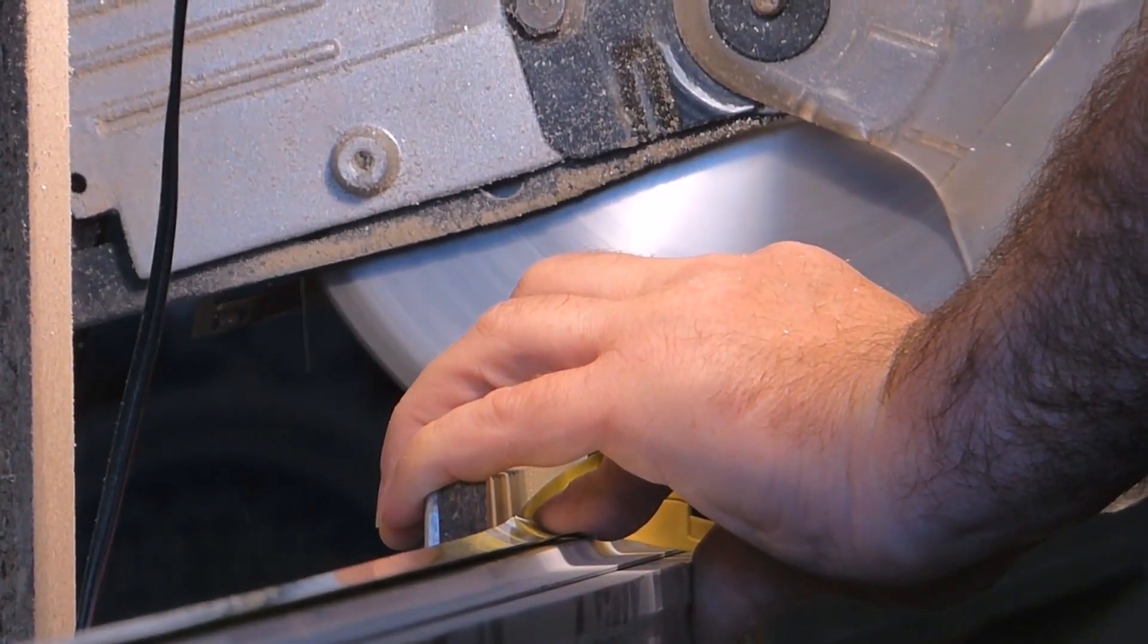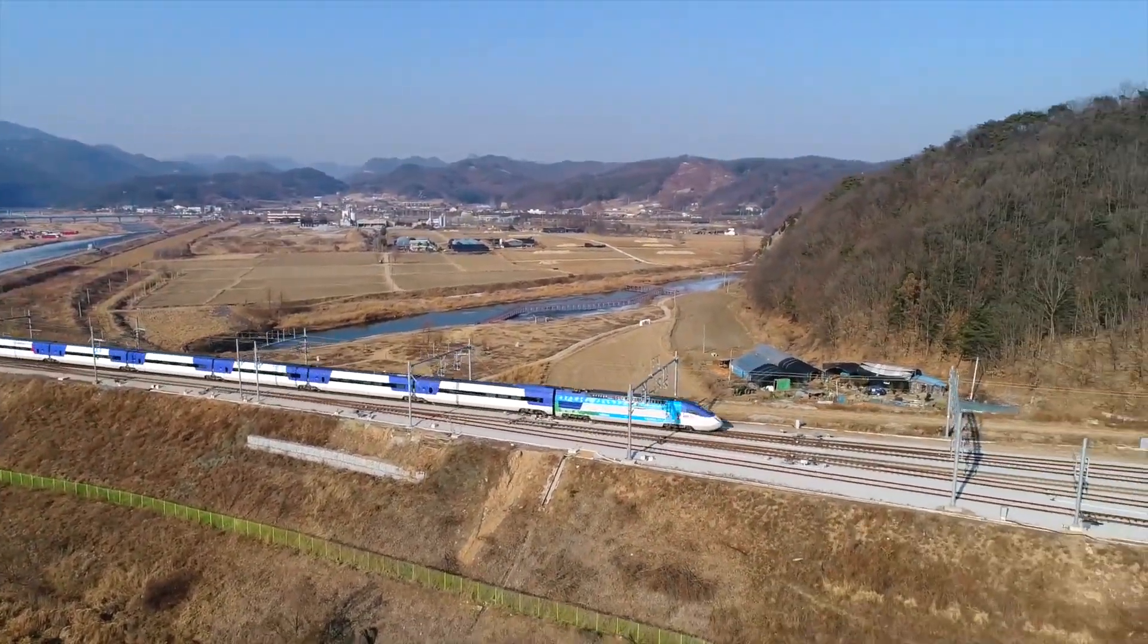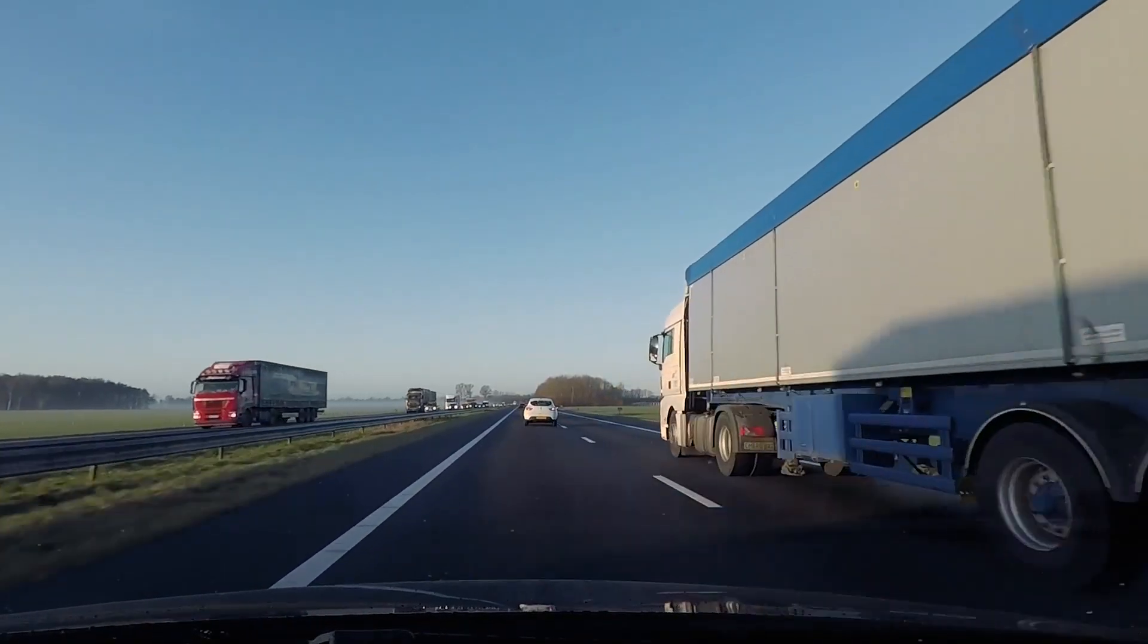You can see eddy current braking in power tools, high-speed trains, and large trucks. Learn more about the physics behind eddy current braking on the ComSlow blog.